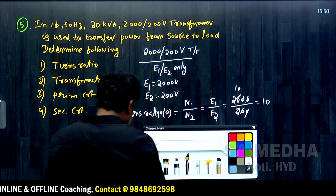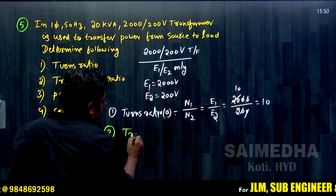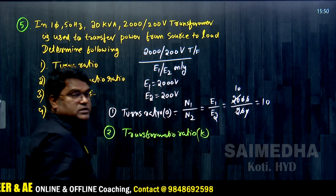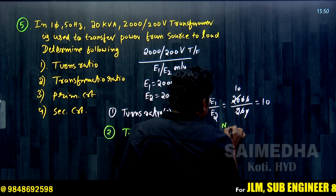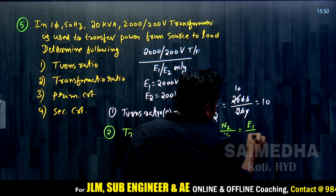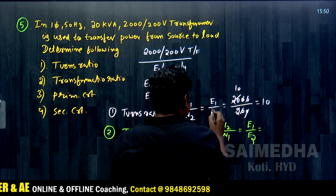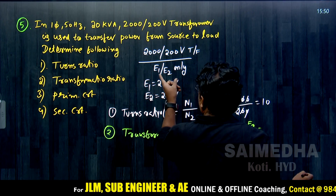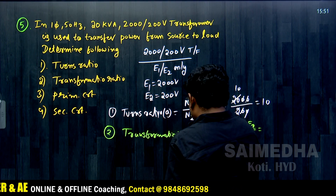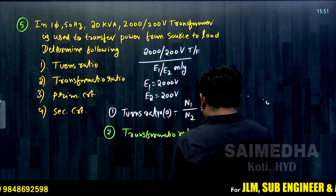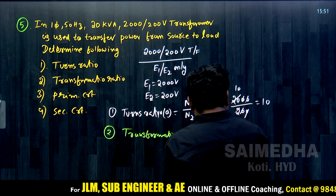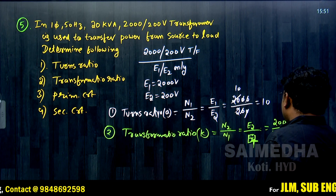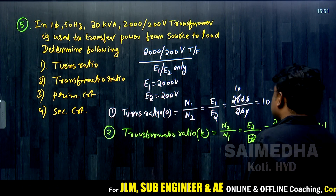Next, the transformation ratio k equals N2/N1, which equals E2/E1 = 200 divided by 2000, which equals 1/10 or 0.1. So the transformation ratio is 0.1.